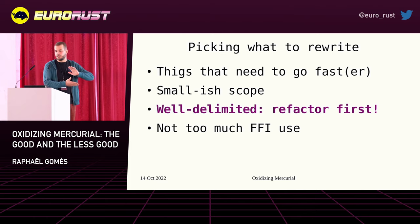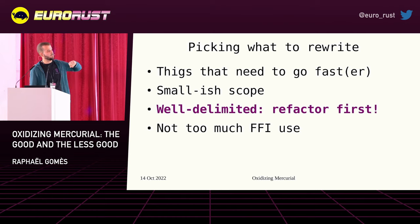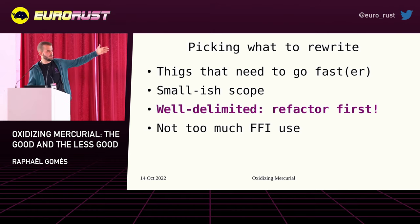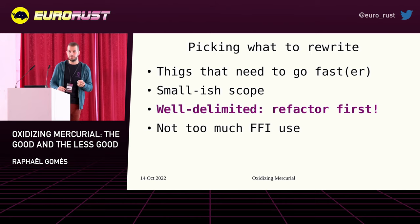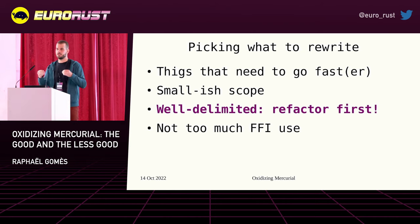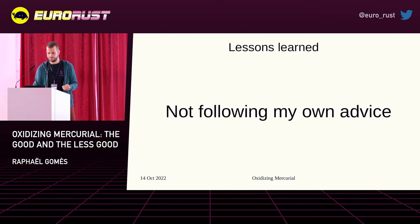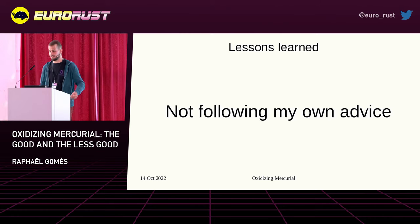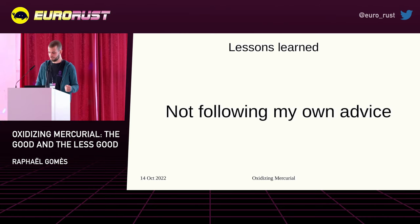Same criteria as before, but with an asterisk. When picking what to rewrite, you specifically need something that is well delimited, and you need to refactor it first if necessary. I'm going to explain how I did not follow my own advice and why you should probably follow it.